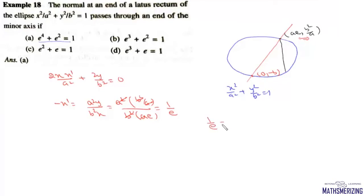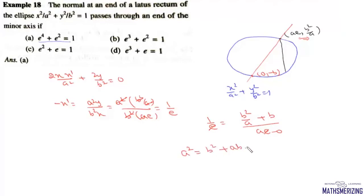We can also find the slope of this line using the slope formula. So we write 1/e = (b²/a + b) / (ae − 0). After cancelling e, we get a² = b² + ab. Now b² = a²(1 − e²), so we substitute: a² = a²(1 − e²) + ab = a² − a²e² + ab.